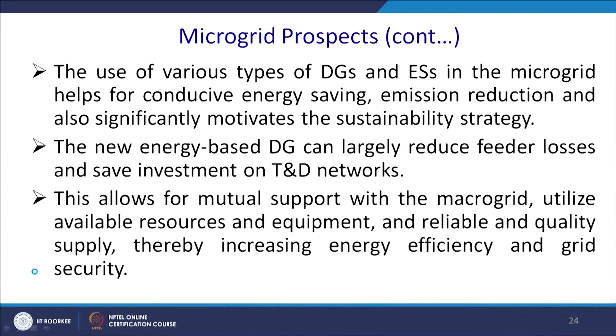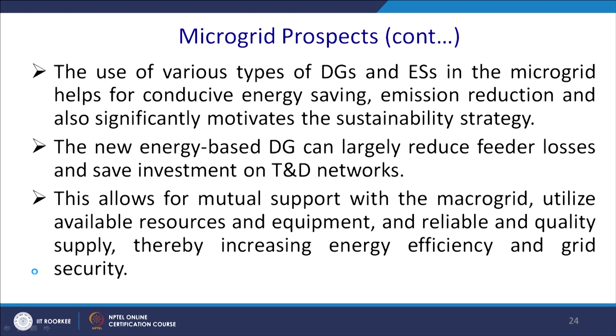New energy-based DG can largely reduce feeder losses and save investment and transmission-distribution losses. It allows mutual support within the microgrid, utilizing available resources and equipment for reliable utility supply, thereby increasing energy efficiency and system security. Today's electrical grid must face the challenge of matching the modern digital economy with higher load demand, uninterrupted power supplies, high power quality, and high-value services. Integration of various intermittent and fluctuating RES leads to reliability problems, ancillary services issues, power quality disturbances, and brownouts and blackouts. New electricity transmission and distribution networks are required for integrating newly emerging distributed RES.